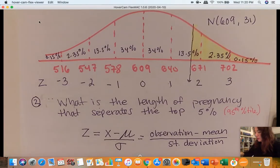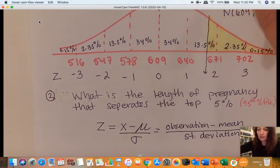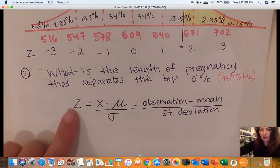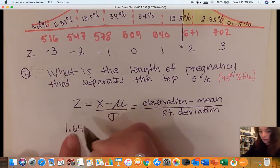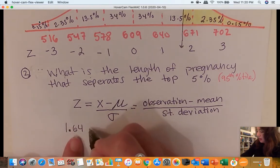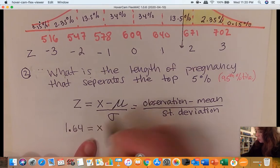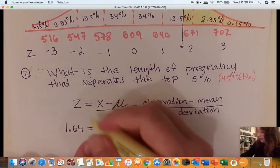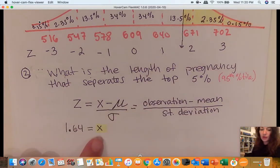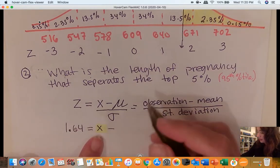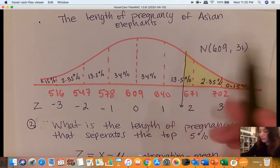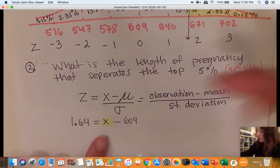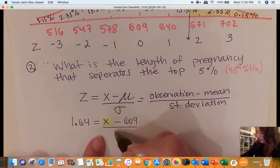We have our z-score is 1.64. I'm going to use all the information I have. I have a z-score of 1.64 from the table. I want to know what are the days, the observation. This is my unknown. I do know my mean, which is 609 from our previous problem, and the standard deviation is 31.